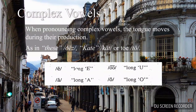Complex vowels. When pronouncing complex vowels, the tongue moves during their production, as in 'this', 'cate', or 'toe'. The complex vowels are the long ones: long E, long A, long U, and long O.